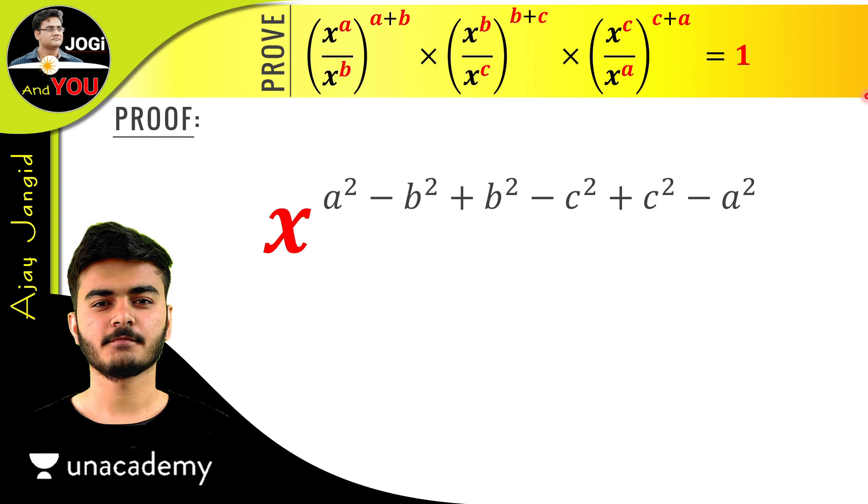We got a very simplest form now: a base and some powers on it in plus and minus. Now you see, a² and -a² will cancel out, -b² and +b² will also cancel out, and -c² and +c² will also cancel out. So everything will cancel out. So what we have in the power? Nothing. Zero.